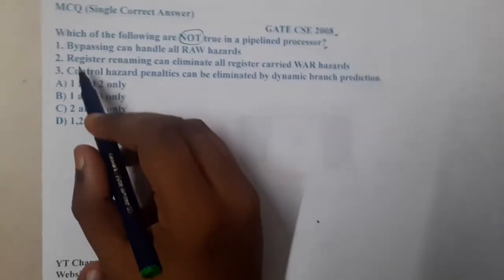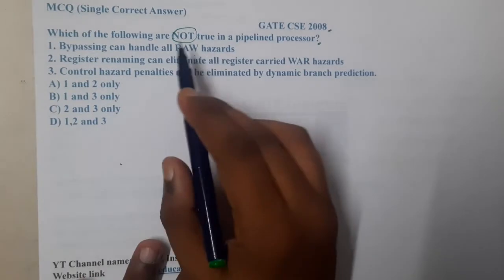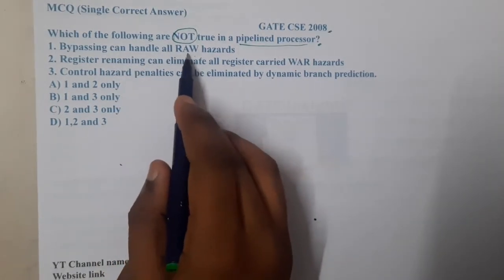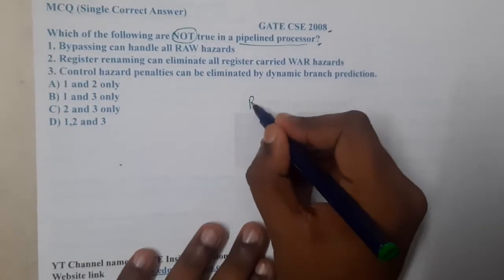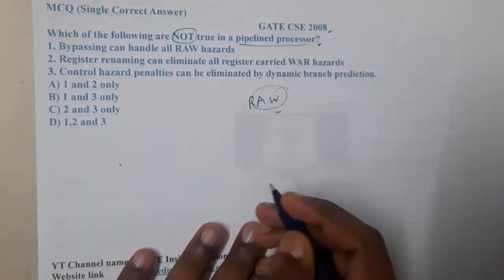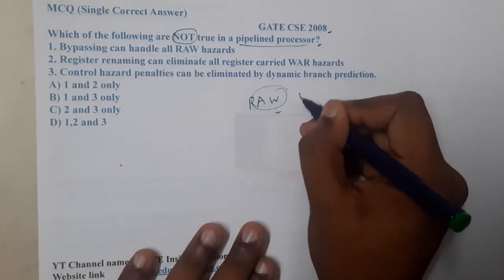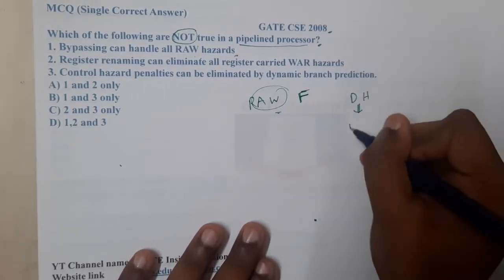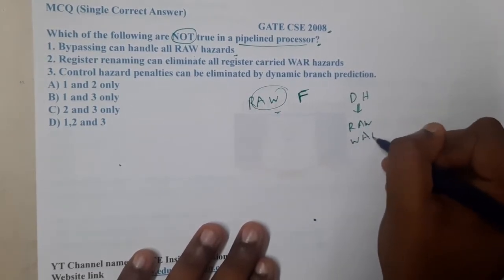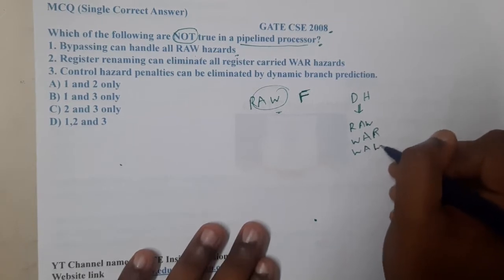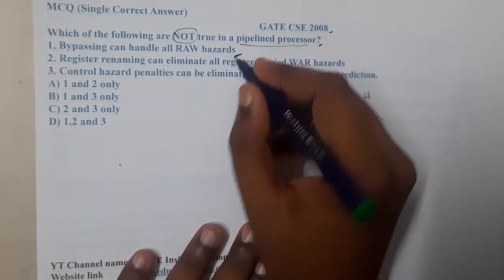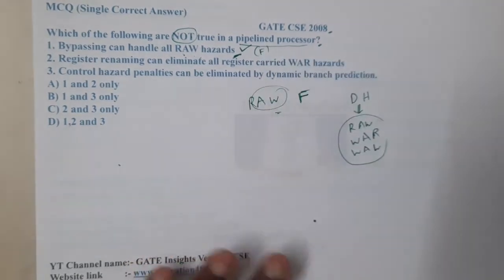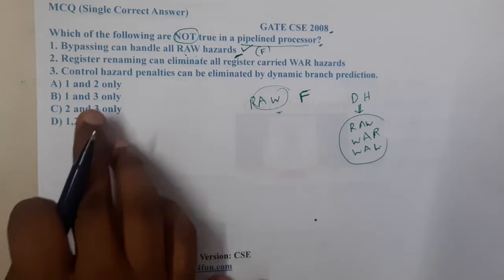Going through the options with respect to pipelining: Option A says bypassing can handle all RAW (read after write) hazards. This is false, because with pipelining we have three types of data hazards — read after write, write after read, and write after write — and bypassing cannot handle all of them. So option A is internally false and will be one of our correct answers.